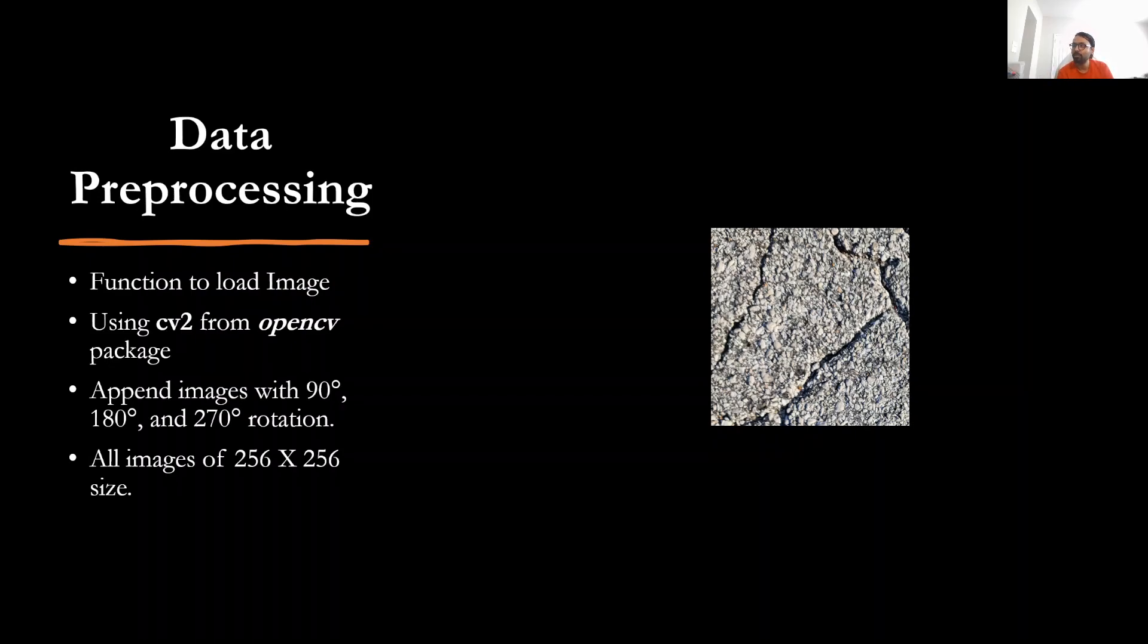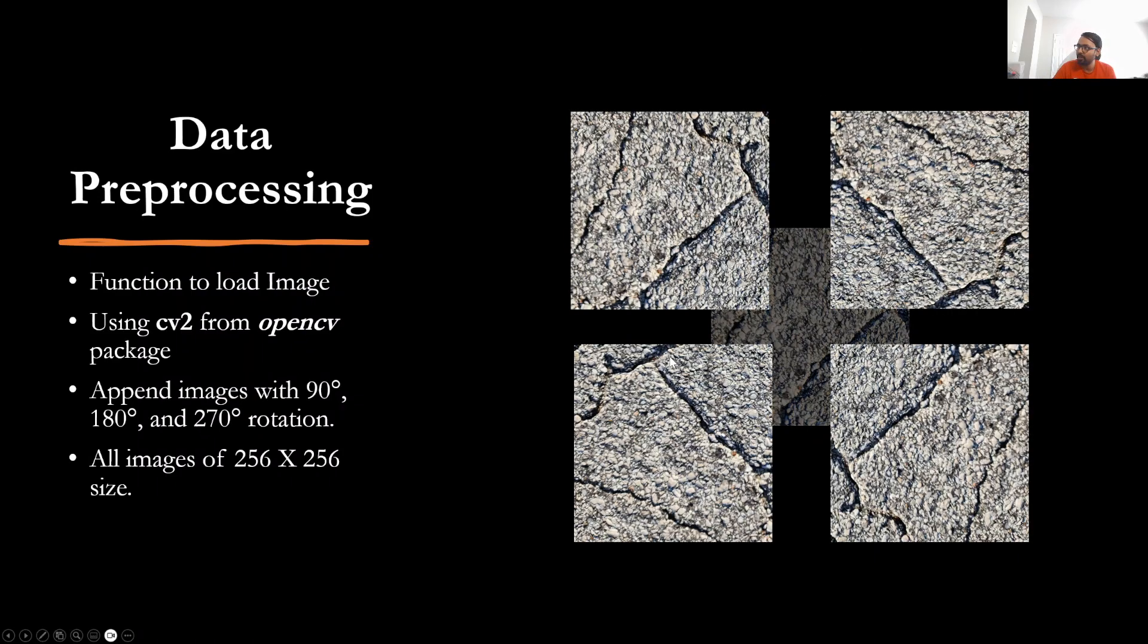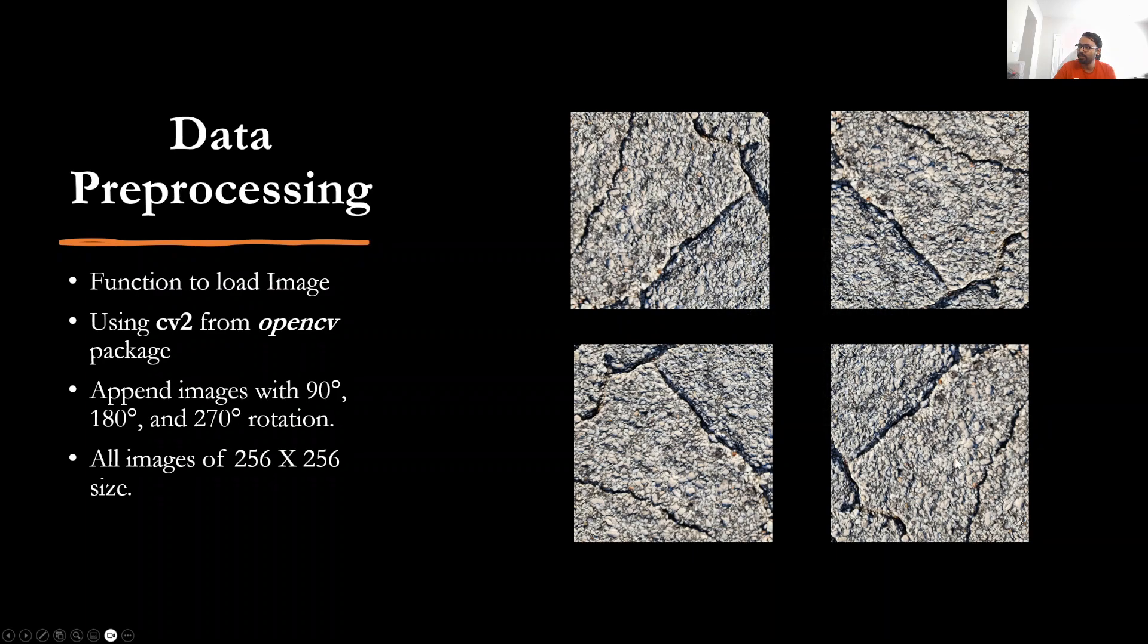So basically, for this one image that we can see here, I rotated it by 90 degrees. So this is the actual image rotated by 90 degrees, 180 degrees, and 270 degrees. So basically, the first initial image that I clicked on the ground has now converted. I split it into four tiles and each tile will have four rotations added to it. So one image has basically converted into 16 images now, given that all the tiles had cracks in it, of course.